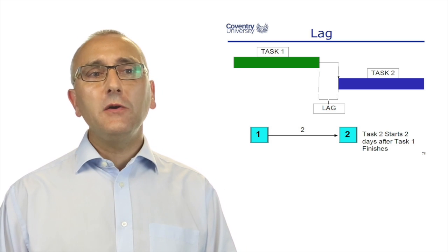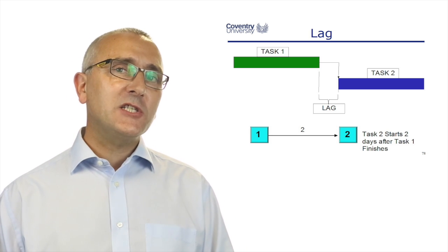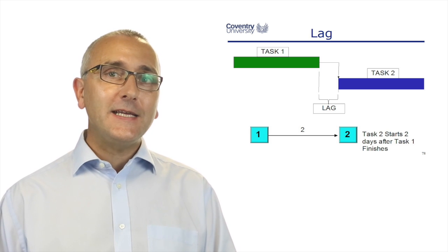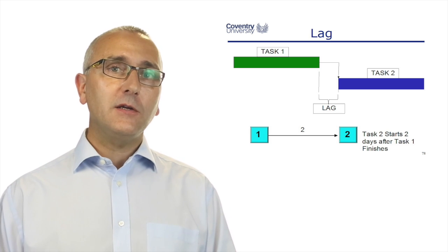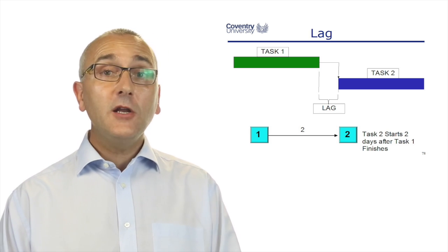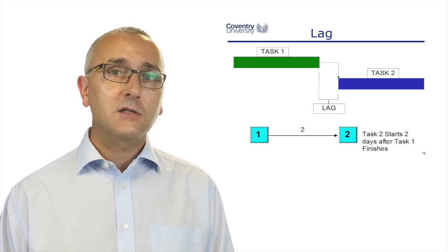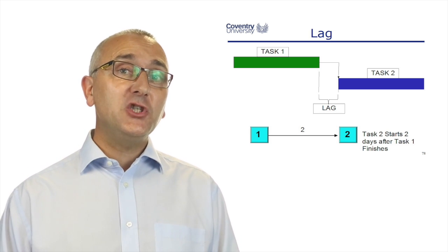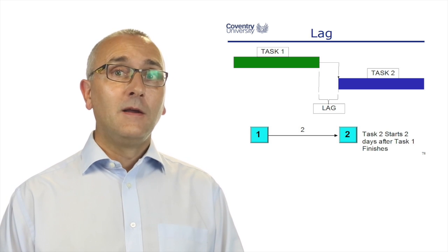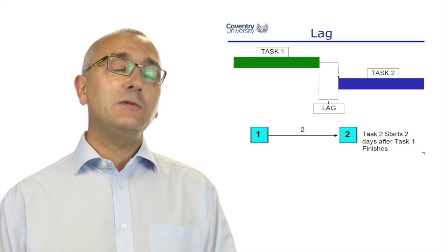Very often in the Gantt chart, it's shown as a gap. I would suggest you actually create a task that defines what that is. Concrete drying time. So give it a task name, put it on the work breakdown structure. Nobody does it, it's got no costs. Transportation time, that might have costs, somebody has to do that, but it is a delay between task one and task two.